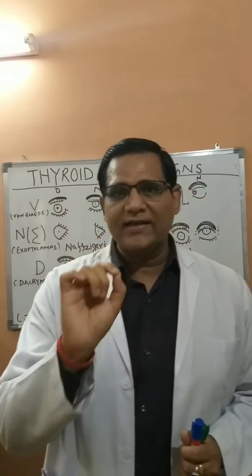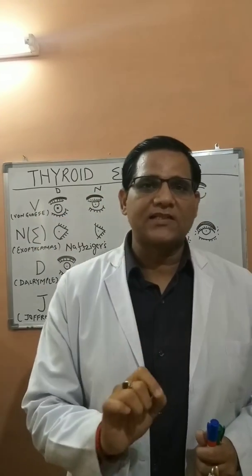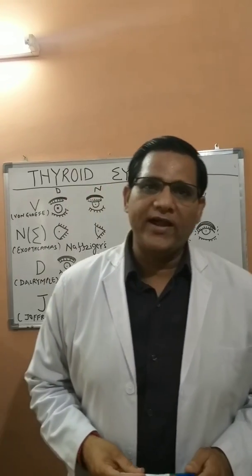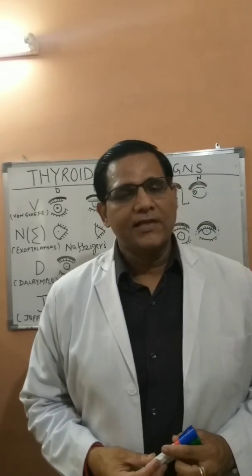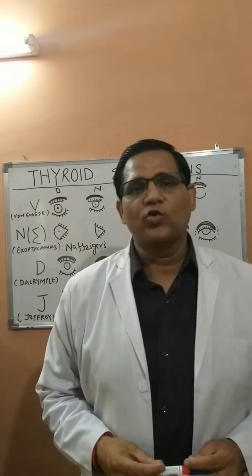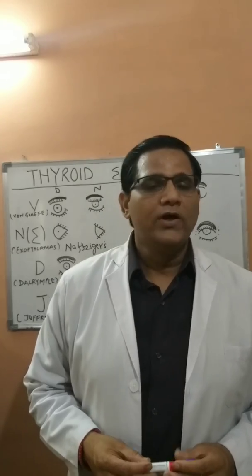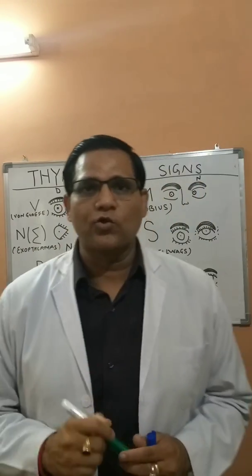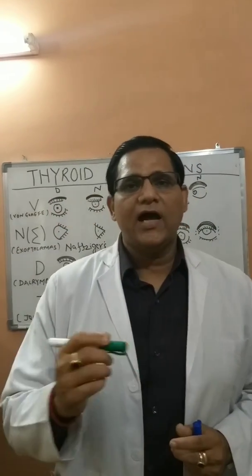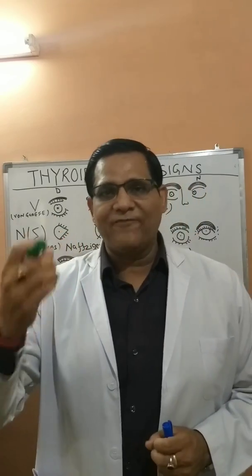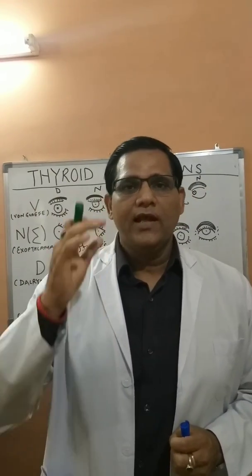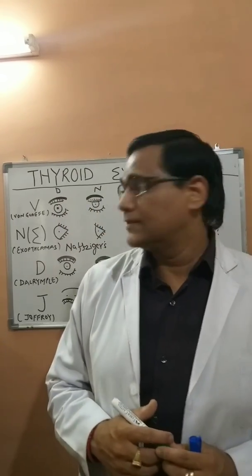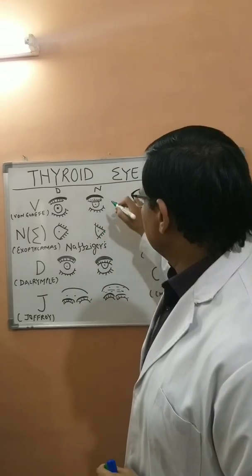First, remember that whenever you find these eye signs, the patient is suffering from Graves' disease. I will also tell you what is the commonest eye sign found in Graves' disease, and at the end I will give you a mnemonic to remember the various eye signs seen in thyroid toxicosis. Most of the eye signs are due to the effect on the levator palpebrae superioris muscle.